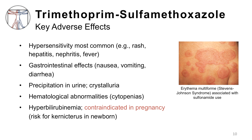Trimethoprim-sulfamethoxazole is associated with a few key adverse effects. Hypersensitivity is the most common. The accompanying picture demonstrates a very severe rash called erythema multiforme, also called Stevens-Johnson syndrome, which is associated with sulfonamide use. Hypersensitivity can also be manifested by nonspecific rashes, hepatitis, nephritis, or drug fever. Gastrointestinal effects are common, including nausea, vomiting, and diarrhea. Precipitation in the urine can lead to crystalluria and associated abnormalities on urinalysis, though this does not commonly alter renal function itself.